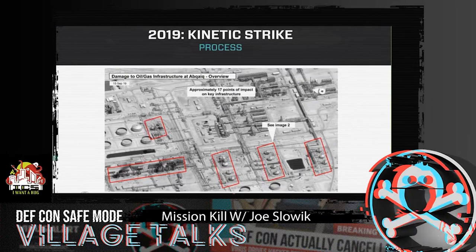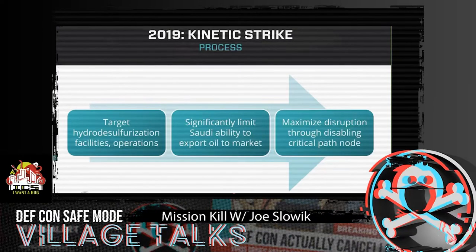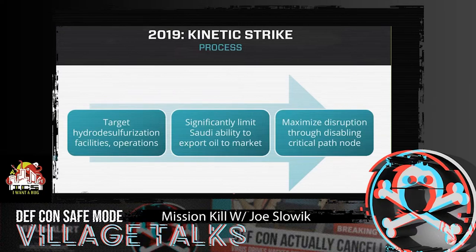Again, a very focused attack on a specific aspect of the Saudi oil industry that shows an understanding of a critical process node or path dependency within Saudi oil operations — allowing for a significantly magnified impact as a result of just attacking one physical component. Targeting hydrodesulfurization facilities would significantly limit Saudi ability to export oil to market, and it did for a period of time. The attacker was able to maximize a fairly limited strike by targeting just the right facilities to cause a magnified impact far beyond the immediate effects of just physical process disruption.